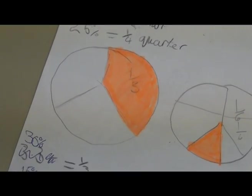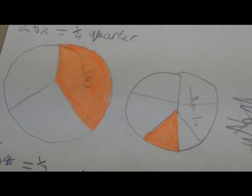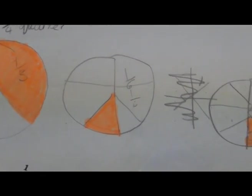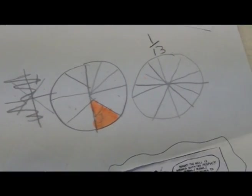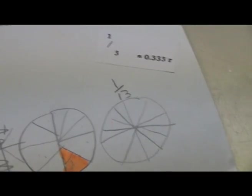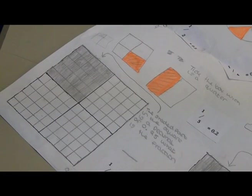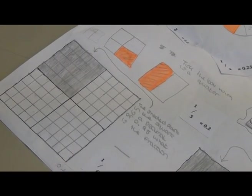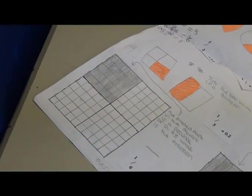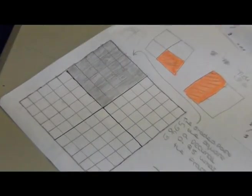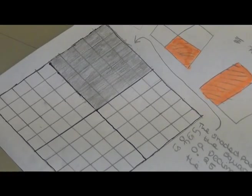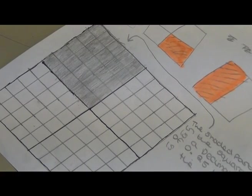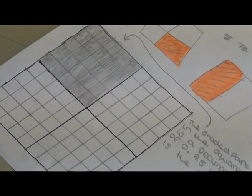If you half a fraction, you double the denominator if the numerator is one. With 100 squares, you can half them by putting a line down the middle to make 50 squares, and to do it again you put another line horizontally to make 25 squares.